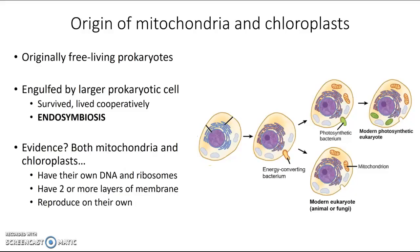Another thing they both do is reproduce on their own, independent of the cell they're living in. So with all those things — having their own DNA, having that extra membrane, and reproducing on their own — that suggests they may have been independent originally and are now just living cooperatively with your cells.